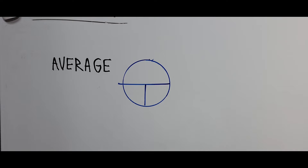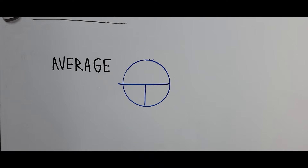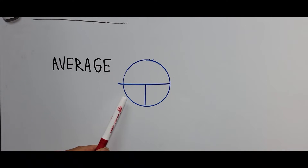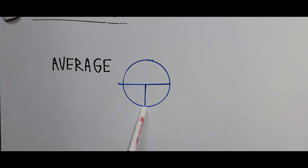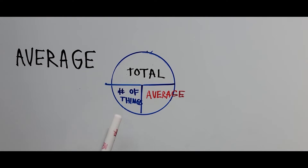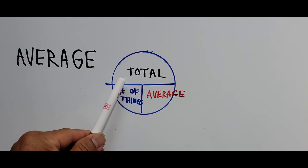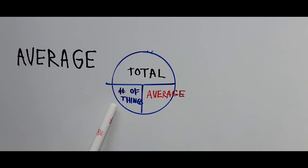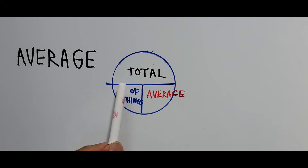What's this circle all about? This is called the average pie. The lines inside the circle — this horizontal line indicates division and the vertical line indicates multiplication. The top portion of the average pie is the total, the bottom-left is the number of things, and the bottom-right is the average.